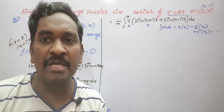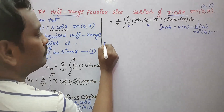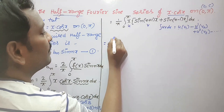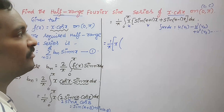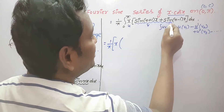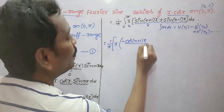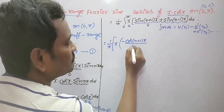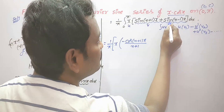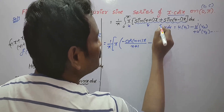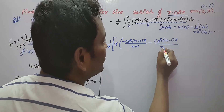In solving Fourier series problems the uv rule is very important. So we write (1/π) · [x · (−cos((n+1)x)/(n+1) − cos((n−1)x)/(n−1)) minus the derivative of x, which is 1, times the integration of those cosine terms: sin((n+1)x)/(n+1)² − sin((n−1)x)/(n−1)²], evaluated from 0 to π.